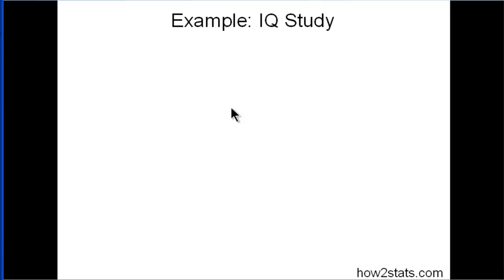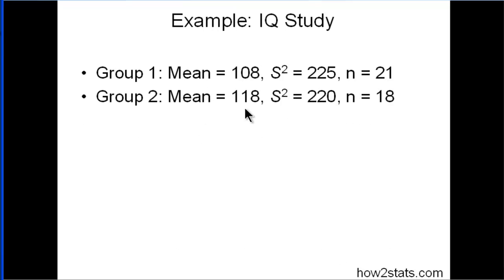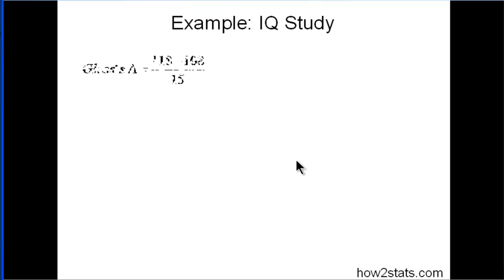Here's an example IQ study. And my phone's going off, so I'm just going to let that ring. So an example here for an IQ study is if you had a group mean of 108, a variance of 225 and a sample size of 21. And then you had a group 2, a mean of 118 with a variance of 220 and a sample size of 18. So it's an IQ study. These are the difference between the means. These are the variances. I could have expressed those as standard deviations, but because I'm using the more formal formula for Cohen's D I thought I would express it this way.